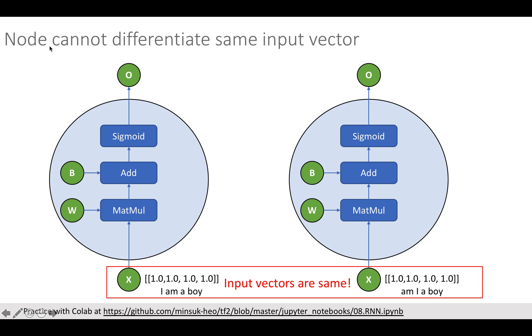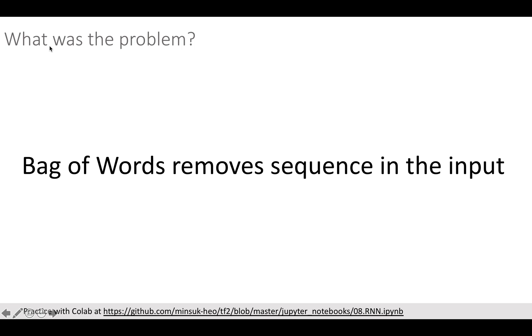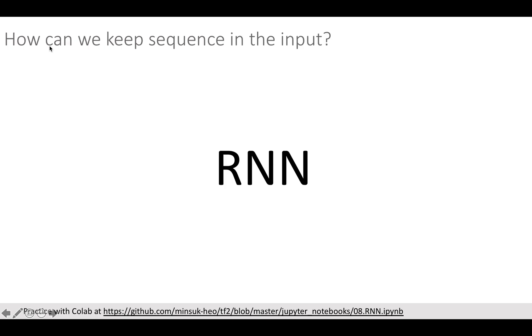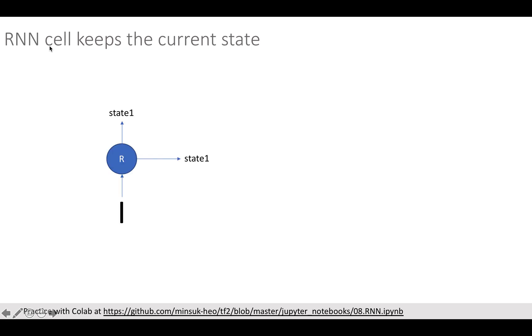Therefore, the deep learning model cannot differentiate these two sentences. What was the main issue here? The main issue is the bag of words trick. Since bag of words removes the word sequence, the deep learning model couldn't differentiate two different inputs. This is the place where RNN can be very powerful since RNN keeps and utilizes sequence of inputs for its decision.